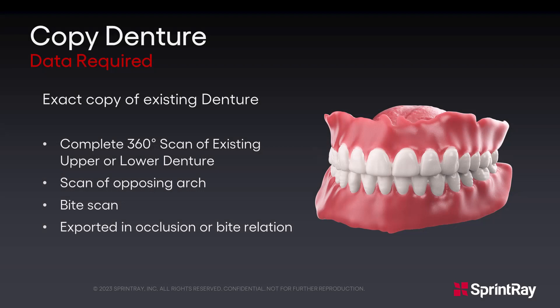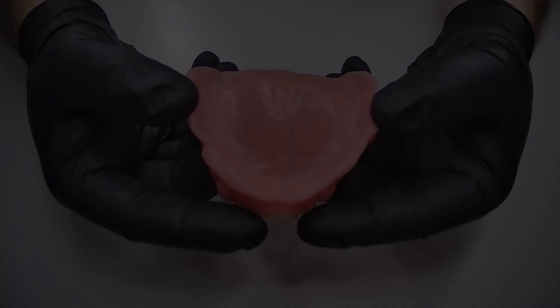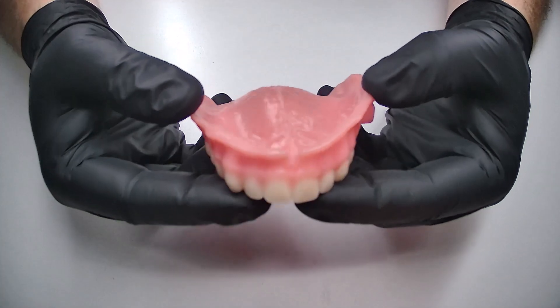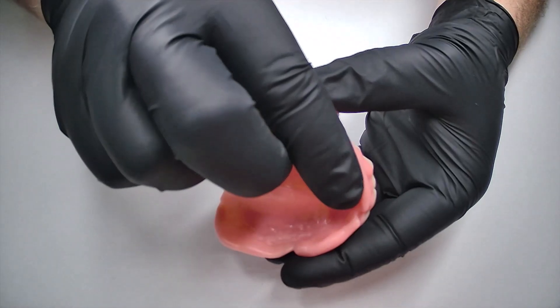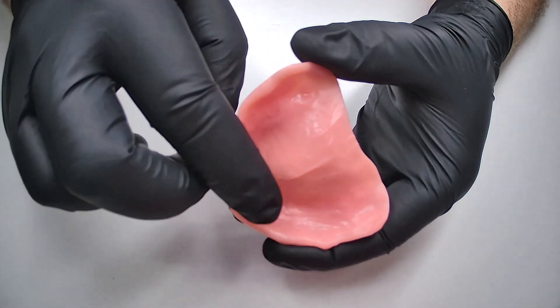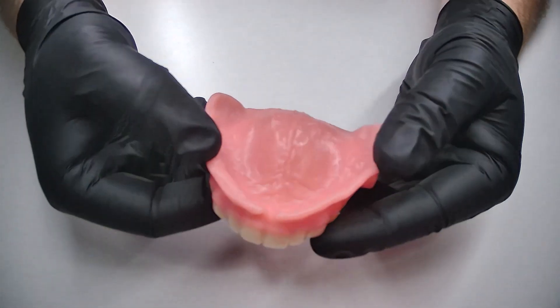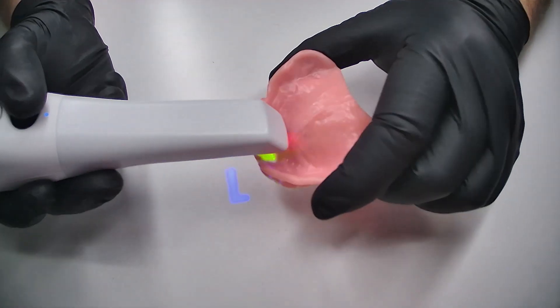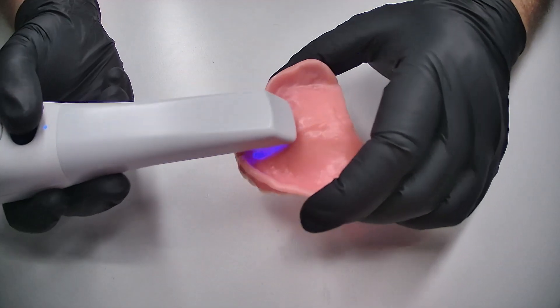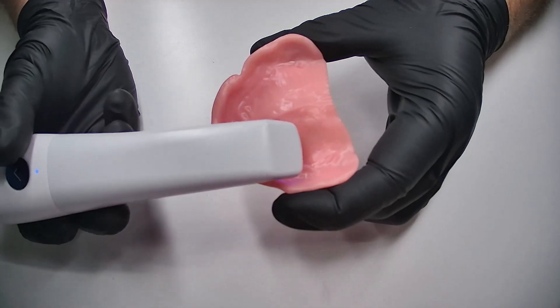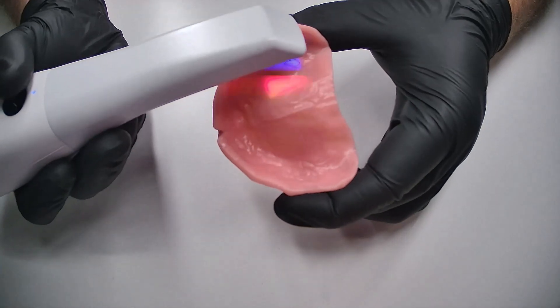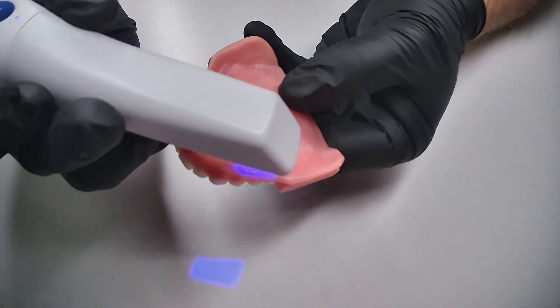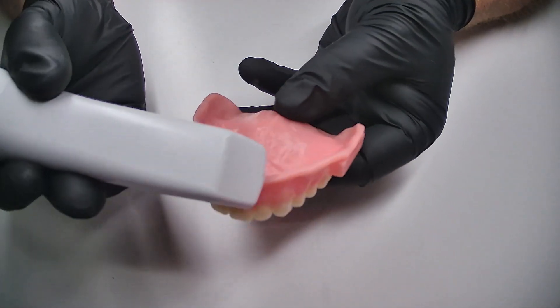For the copy denture workflow, we will be creating an exact copy of the existing denture. We will be taking a complete 360-degree scan of the existing denture, a scan of the opposing arch, as well as a bite scan and exported in bite relation. Begin by reviewing the anatomical features of the denture, ensuring you are aware of any undercuts or anatomical features that may be challenging to scan. In this example, the upper denture will be scanned outside of the patient. Most scanners will have you start with an anatomical landmark such as the incisive papilla. This gives the scanner a reference point to work from and allows the data to be correctly aligned during the scan process. Work slowly to ensure that all data is captured such as undercuts and the occlusion.